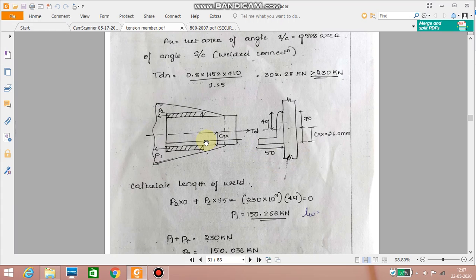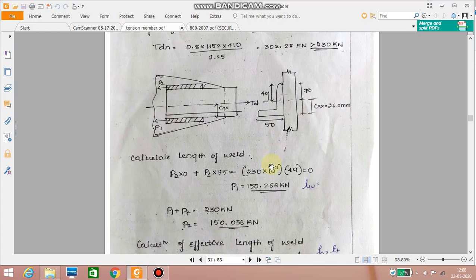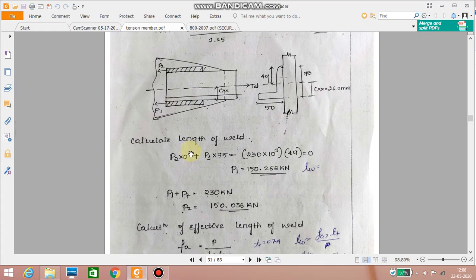Now here since we have a welded connection we need to get Cxx or Czz value from the steel table. So from this steel table we get Cxx equal to 26 millimeter by assuming the longer edge is connected to the gusset plate and the shorter leg is the outstanding leg here. Now we will calculate length of the weld.